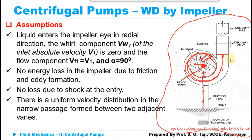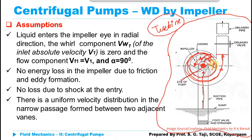Whenever we derive the equation for work done per second by the impeller on the fluid, we need to consider the angular momentum — that is, the torque developed by the radial backward curved vanes exerted on the water. This is the reverse of the turbine case, where the jet of fluid exerts force on the curved vanes; here, the impeller vanes exert force on the fluid.